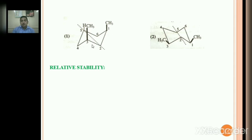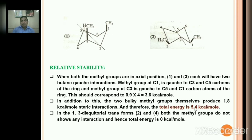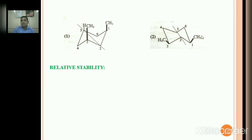However, the actual total energy for this molecule is 5.4 kilocalorie per mole, not 3.6. This is because the molecule also shows 1 additional steric interaction between the two methyl groups, having energy 1.8 kilocalorie per mole. So, 4 butane-gauche interactions give 3.6 kcal/mol, plus the methyl-methyl steric interaction of 1.8 kcal/mol, giving total energy 3.6 + 1.8 = 5.4 kilocalorie per mole.